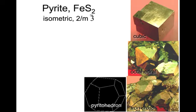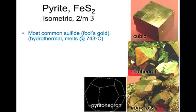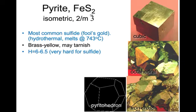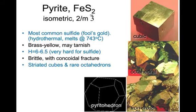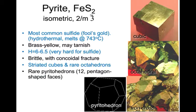Finally, let's look at pyrite. Pyrite is isometric — another cubic crystal class — and it's the most common sulfide. It's often called fool's gold because it has a pale yellow color similar to gold. However, it's a hydrothermal mineral that melts at 743 degrees C and is commonly brass yellow but may tarnish to yellows, browns, or rust color. It's very hard for a sulfide — 6 to 6.5 — and it characteristically fractures brittlely with a conchoidal fracture, unlike gold, which is sectile and malleable. It forms striated cubes, rare octahedrons as shown on the upper right, and rarely pyritohedrons — 12 pentagon-shaped faces — and rarely iron cross twins.